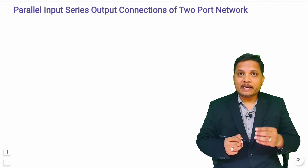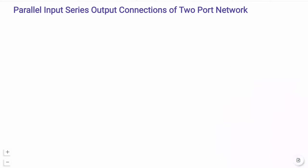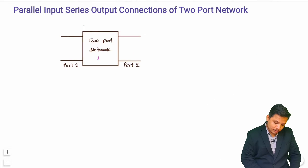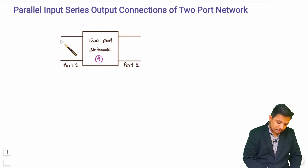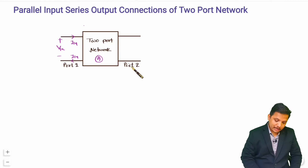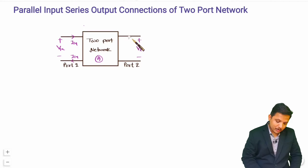Let me take one Two-Port Network first. Let us say this is Two-Port Network A. At Port 1, voltage is V1A, current going inside is I1A and current coming out is I1A. At Port 2 of Two-Port Network A, voltage is V2A, current going inside is I2A and current coming out is I2A.